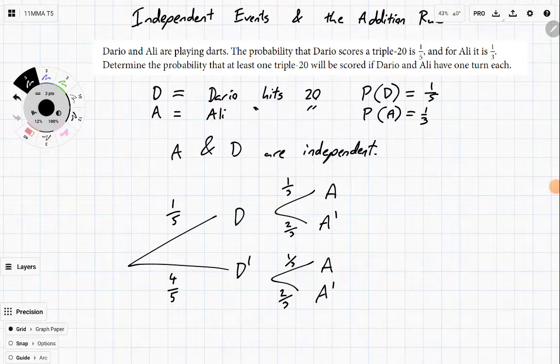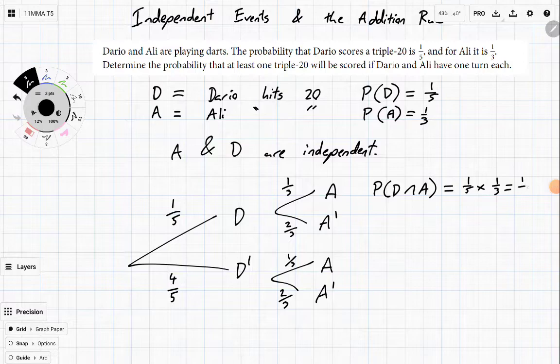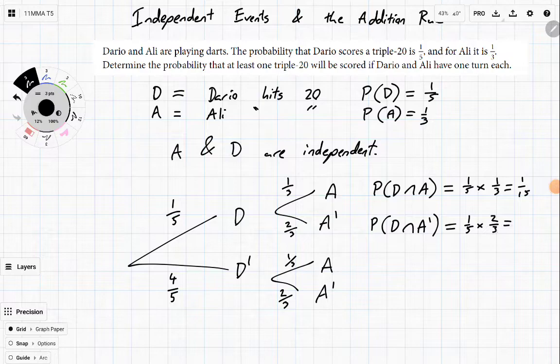All righty, so that means the probability of D and A, meaning they both hit, is going to be a fifth times a third, which is a fifteenth. The probability of D hitting and A missing is going to be a fifth times two-thirds, which is two over fifteen.